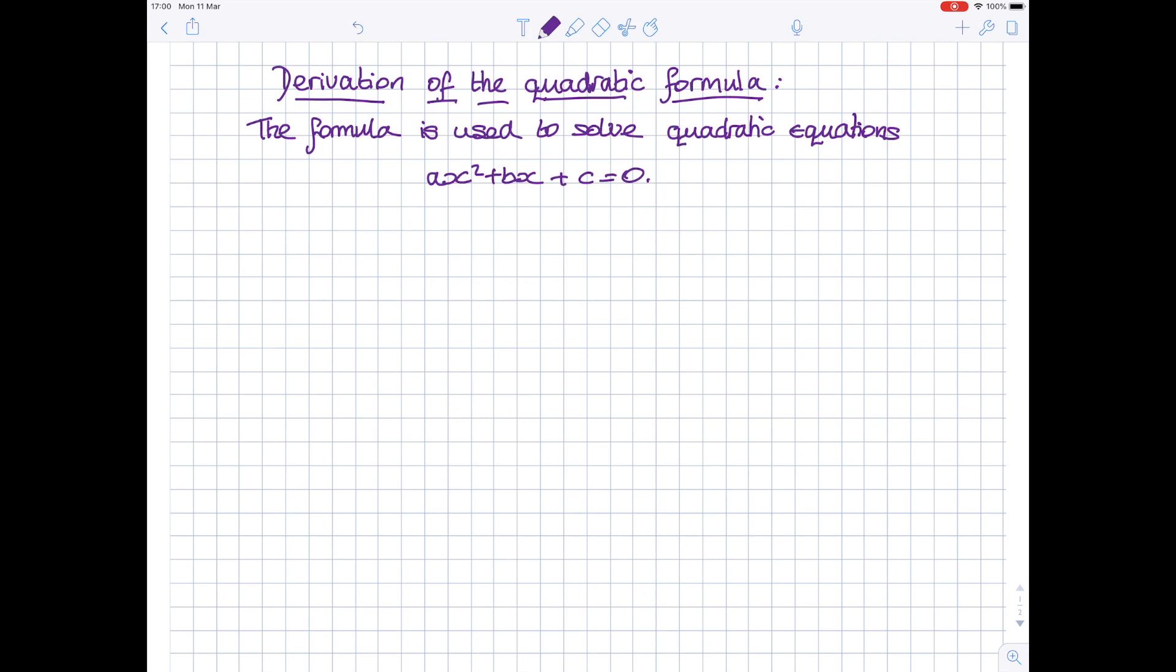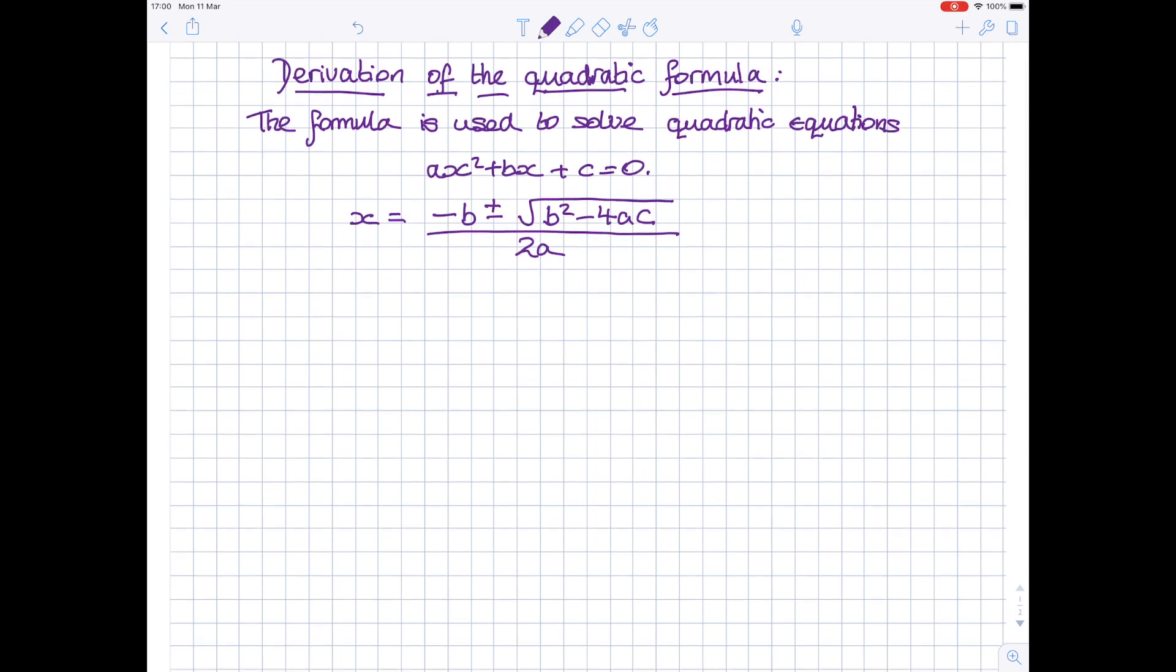Now, using this formula, an equation can be solved by x is equal to minus b plus or minus the square root of b squared minus 4ac totally divided by 2a. And I'm going to show you where this formula comes from.